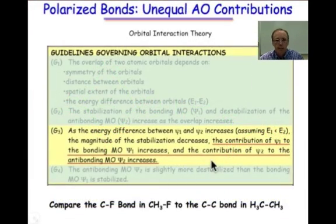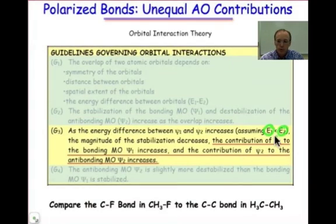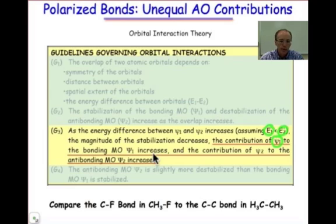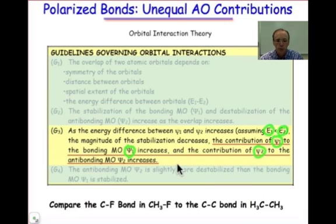This simply means that as the energy gap between those two atomic orbitals widens, the contribution of atomic orbital ψ1 to the bonding molecular orbital Ψ1 is going to increase, and the contribution from that higher energy atomic orbital ψ2 to the antibonding orbital Ψ2 is going to increase.